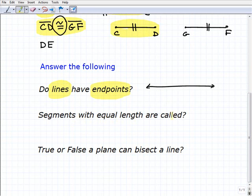Segments with equal length are called, equal length, and we're talking about line segments. Segments with equal length are called congruent segments. And of course, the symbol we just talked about is this, equal sign with a little squiggly mark over it.